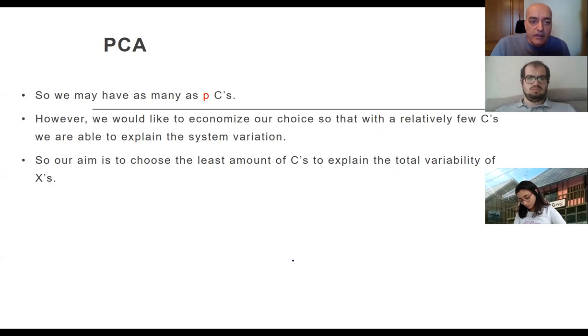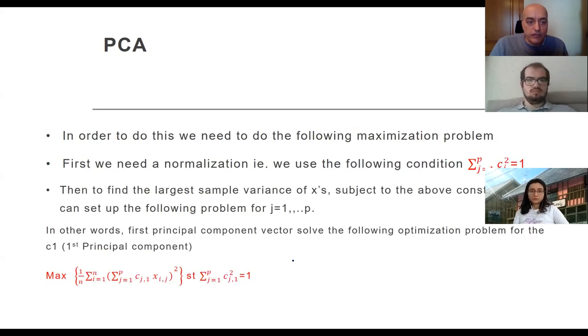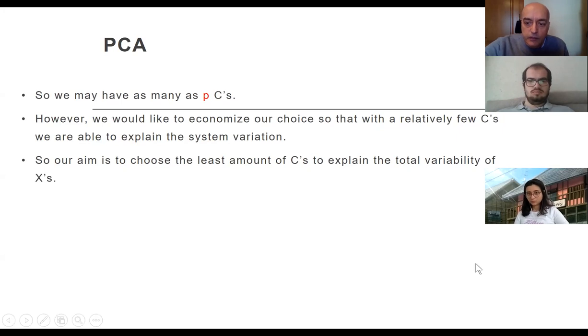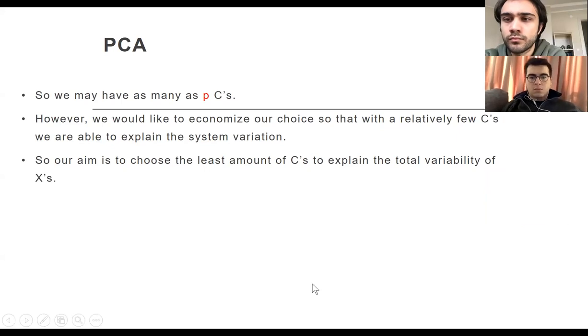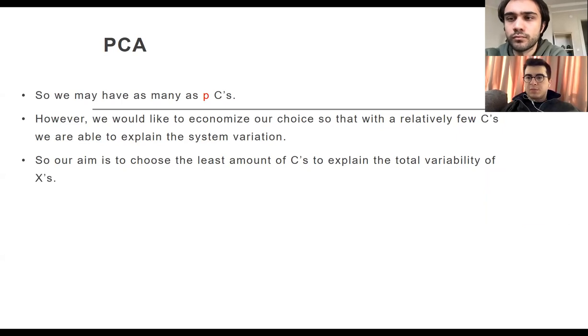What our aim is - to maximize the explanatory power of C subject to the constraint. I would like C to be the best representative of the variance. In other words, C by itself will maximize the explanatory power of that particular thing subject to the constraint that I put, which is normalization constraint.